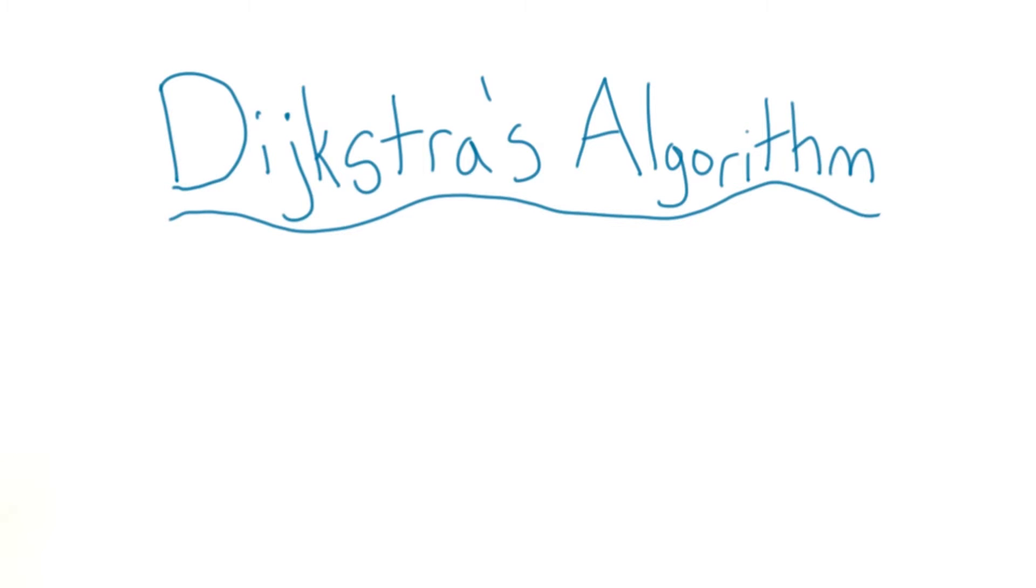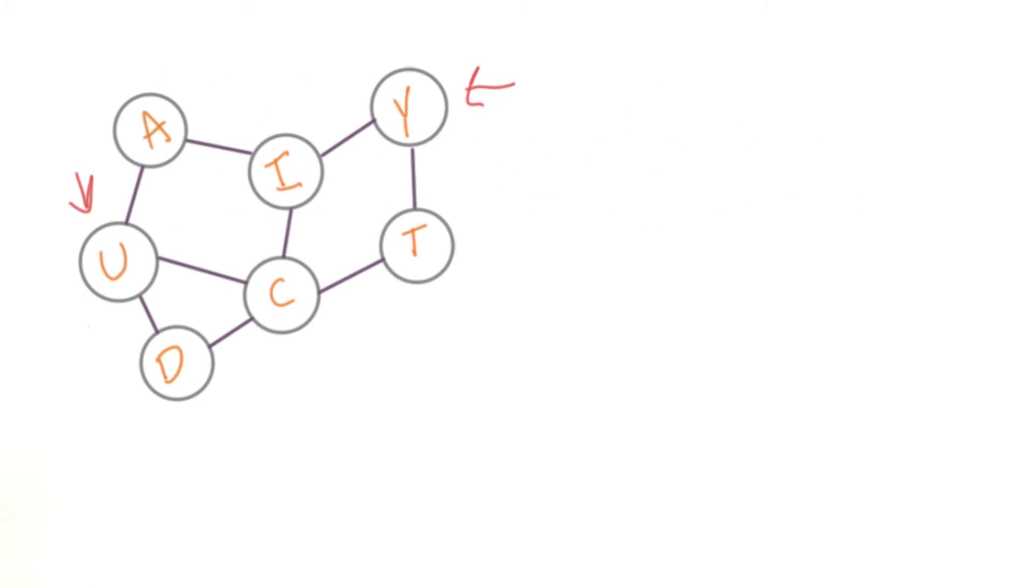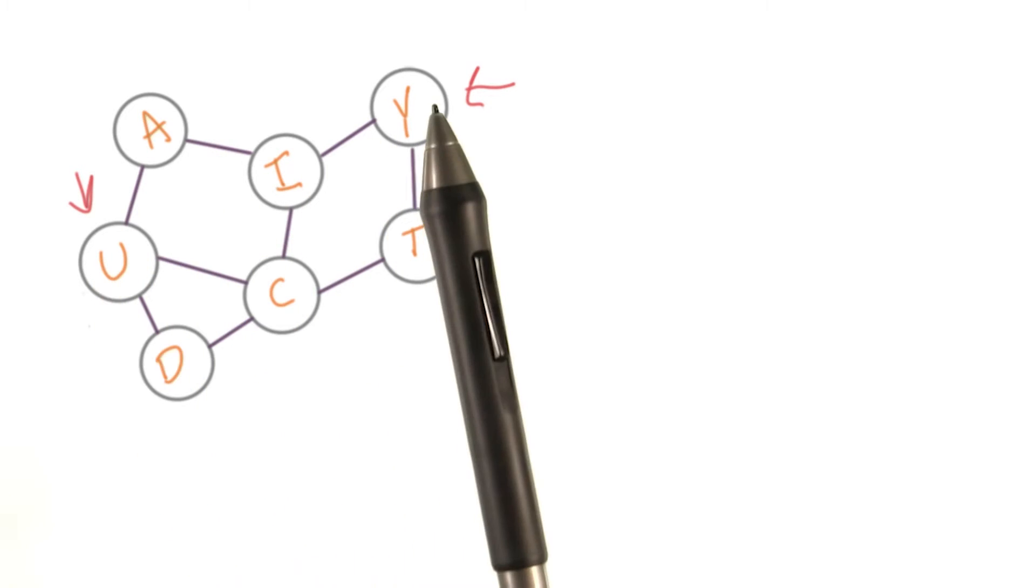One solution to the shortest path problem for weighted, undirected graphs is called Dijkstra's algorithm. Let's say we're trying to find the shortest path from here to here.